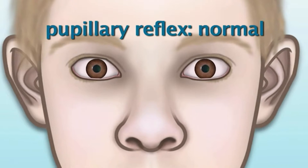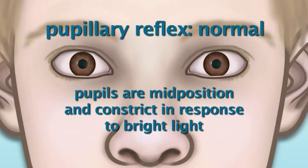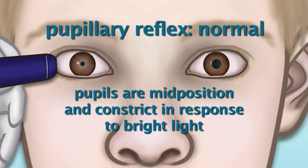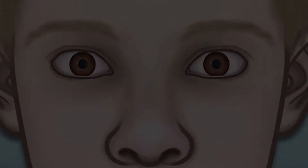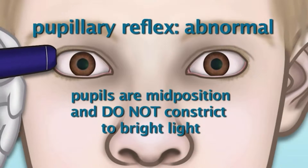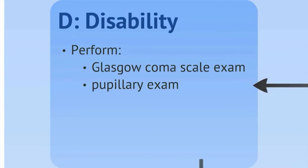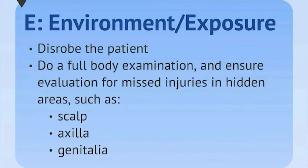With a normal and intact pupillary reflex, the patient's pupils are mid-position and constrict in response to bright light. An abnormal pupillary reflex is demonstrated by pupils that are mid-position, often dilated, and do not constrict in response to bright light. The primary survey is then finished with environment and exposure of the patient, whereby we disrobe the patient and do a full body examination to make sure we don't have any missed injuries, including puncture sites or lesions hidden in areas of the scalp, axilla, or genitalia.